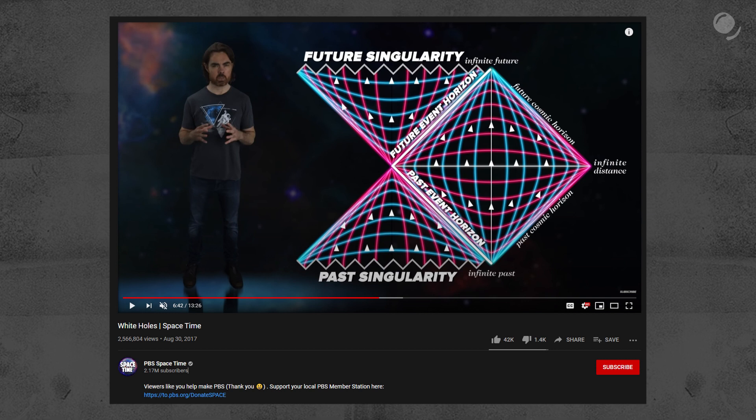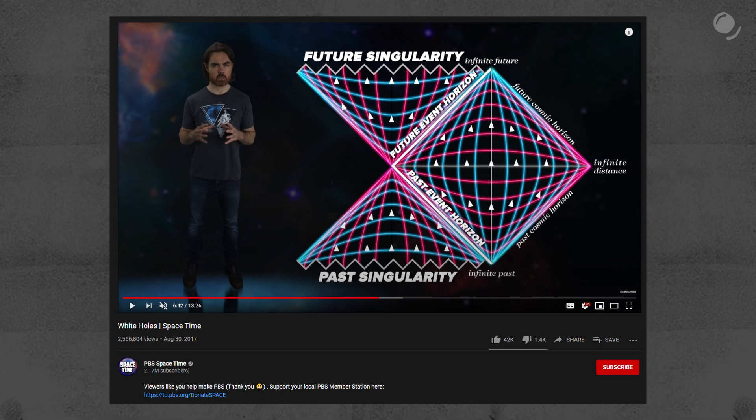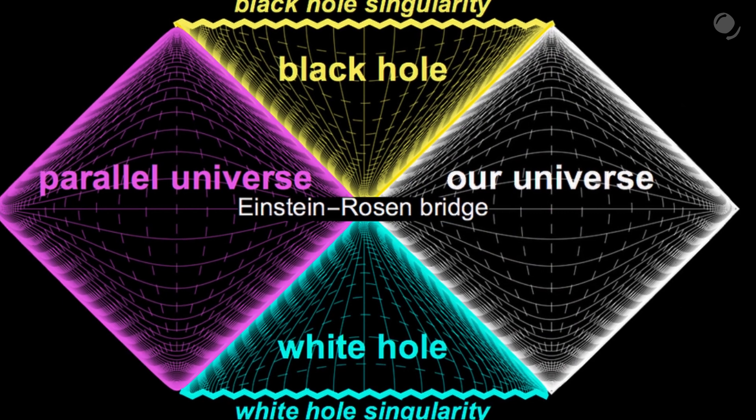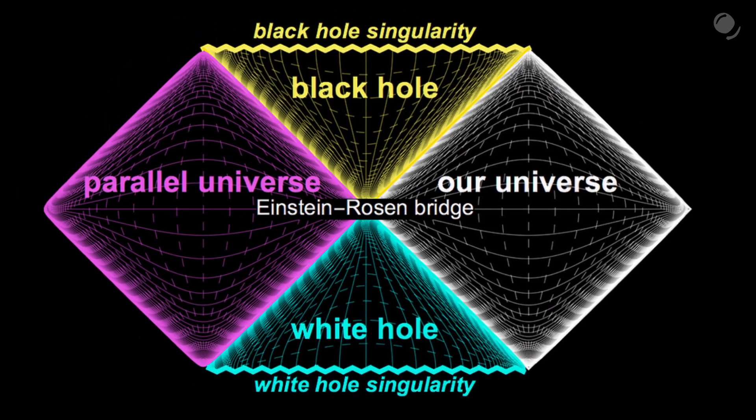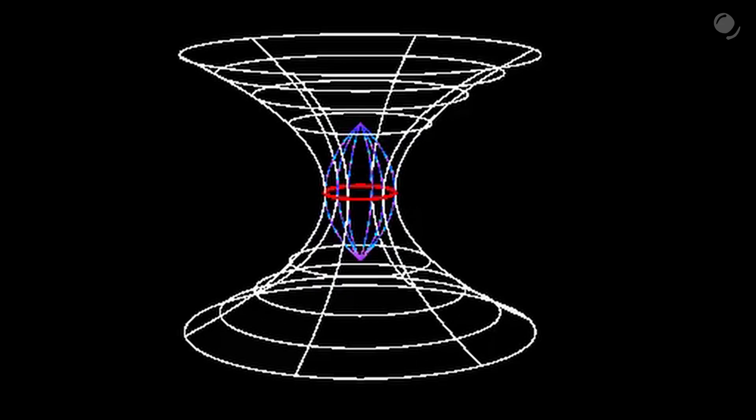Such a diagram is described in detail in this PBS space-time video, I'll leave a link to it in the description. There are different kinds of diagrams, like this Kruskal-Szekeres diagram. We can see two universes, one with a black hole and the other with the white hole. And they are connected via Einstein-Rosen bridge, which is sometimes known as a wormhole.